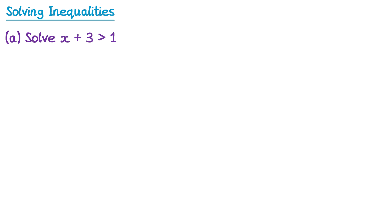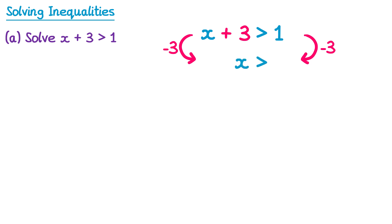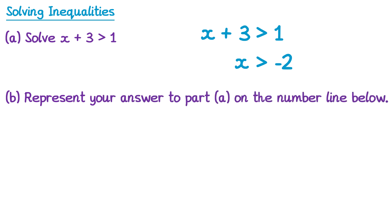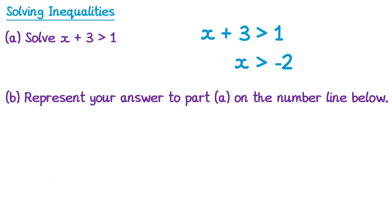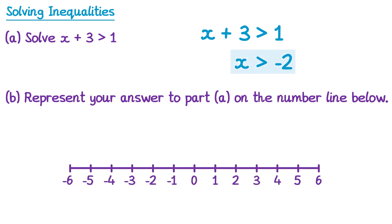Sometimes we may have to solve an inequality and then draw the solution on a number line. For example: solve the inequality x plus 3 is greater than 1. We subtract 3 from both sides; the 3s cancel on the left, giving x is greater than negative 2. Then for part b, we represent our answer on the number line. We draw a circle above negative 2 and then an arrow in the direction of the numbers we need — the numbers greater than negative 2 are to the right. Since this is a regular greater than symbol and not greater than or equal to, we do not shade in the circle.